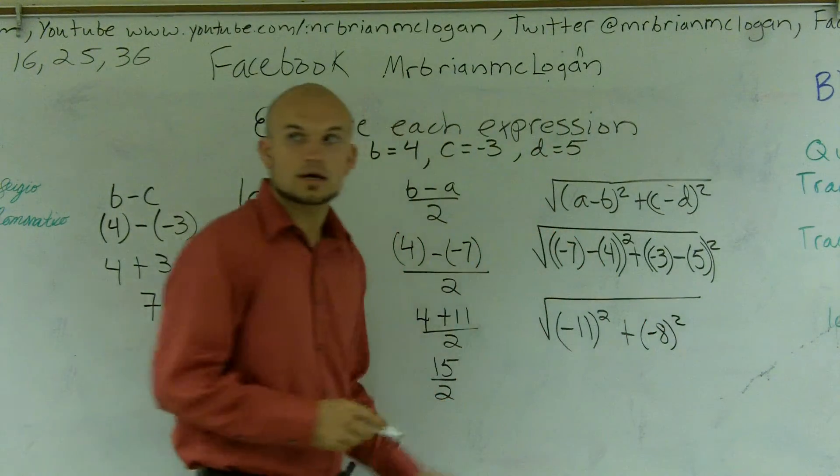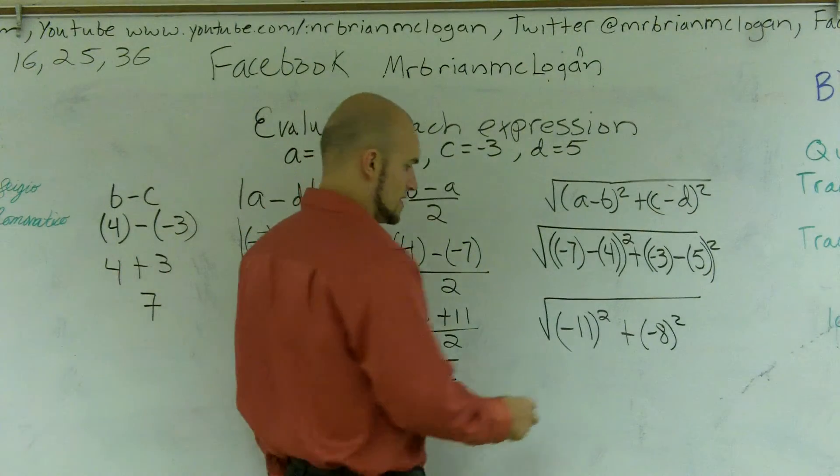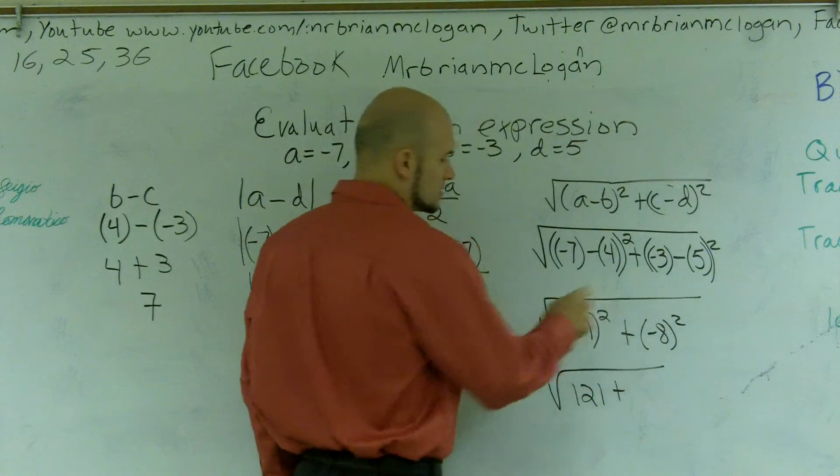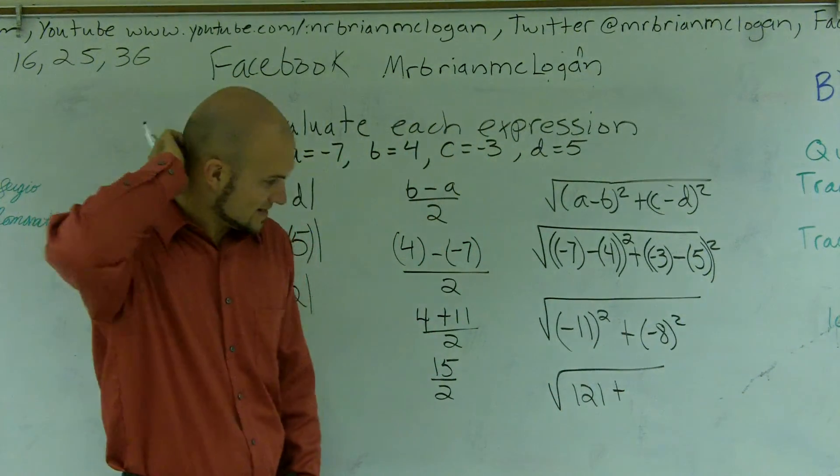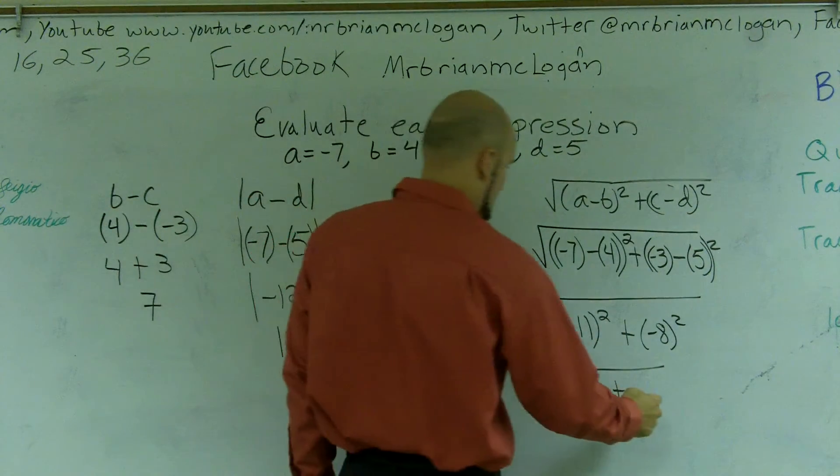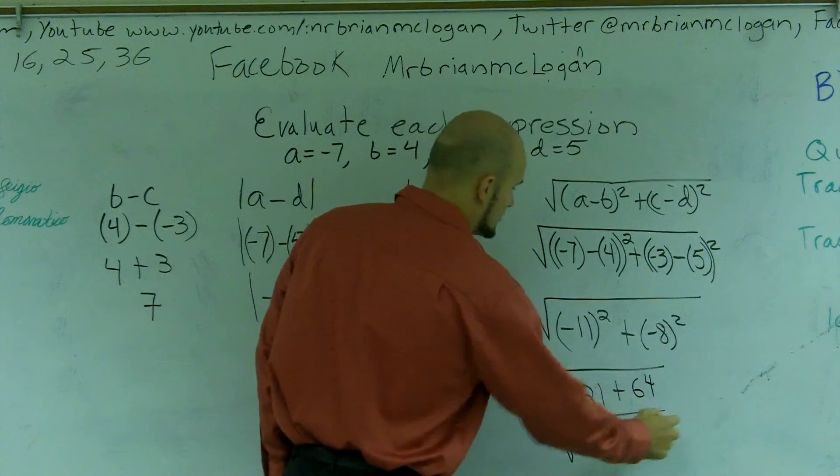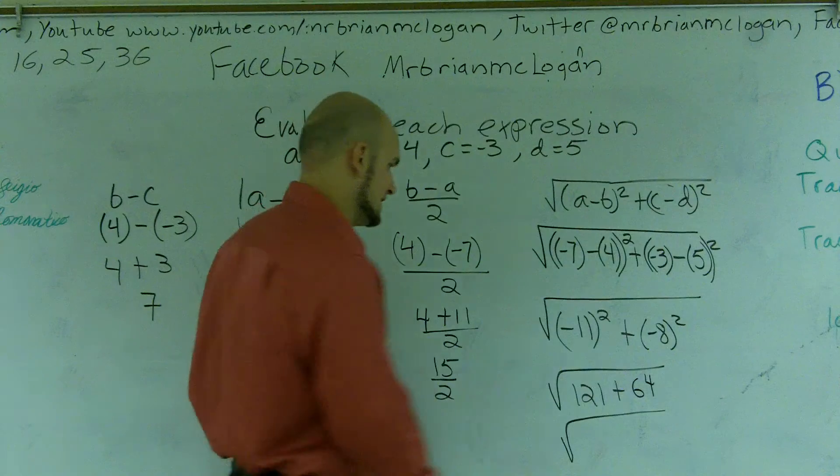And then I'm going to square that, plus a negative 3 minus 5 is going to give me a negative 8. All right? Negative 11 squared is going to give me a positive 121, plus a negative 8 times negative 8 is a positive 64. Then I still can combine these under my root, and I'm going to get 185.